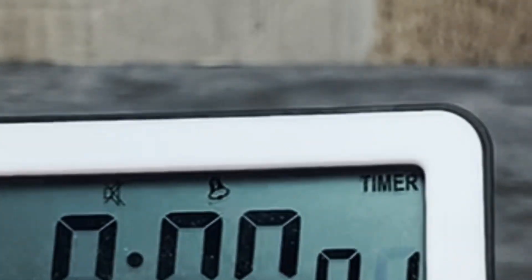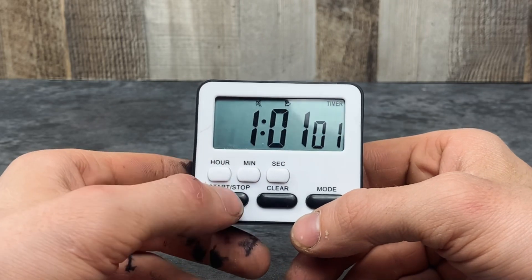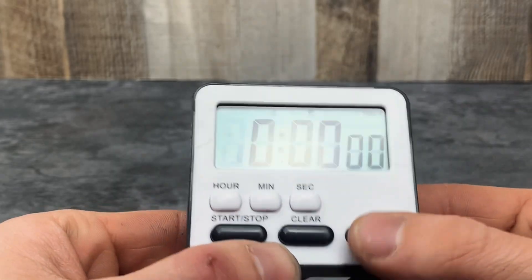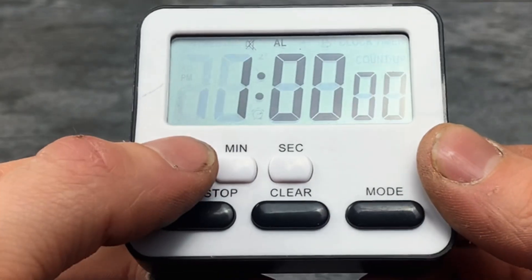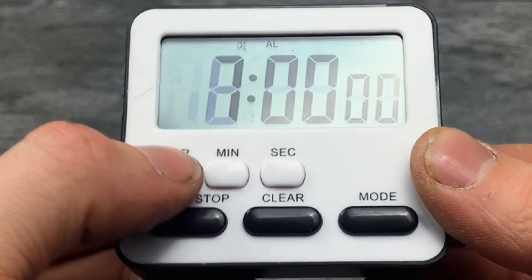Hitting the mode button again lets you switch to the alarm clock. You can set the time for this and then turn it on and off by hitting the start/stop button.